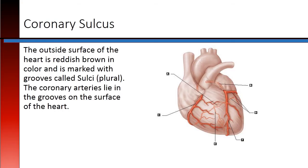The outside surface of the heart is reddish-brown in color and is marked with grooves called sulci. A singular groove is a sulcus. The coronary arteries lie in the grooves on the surface of the heart.